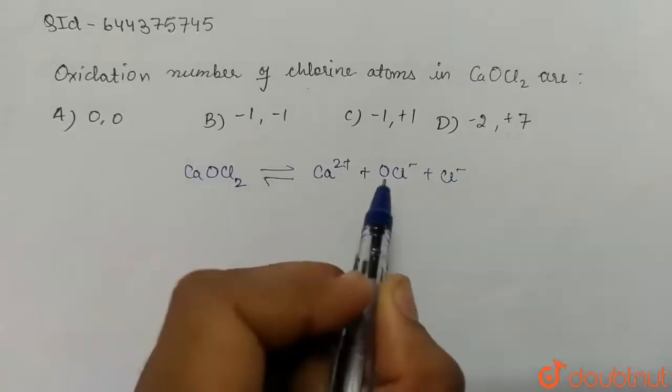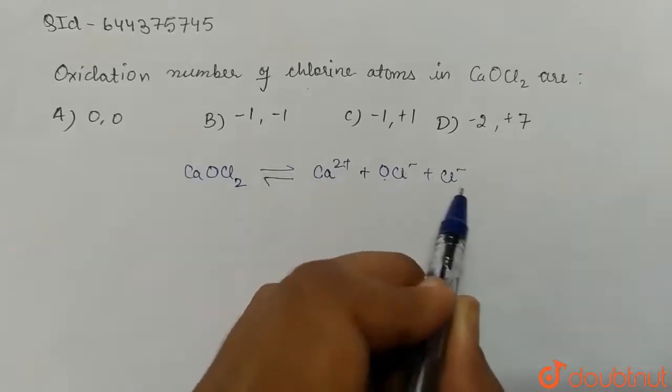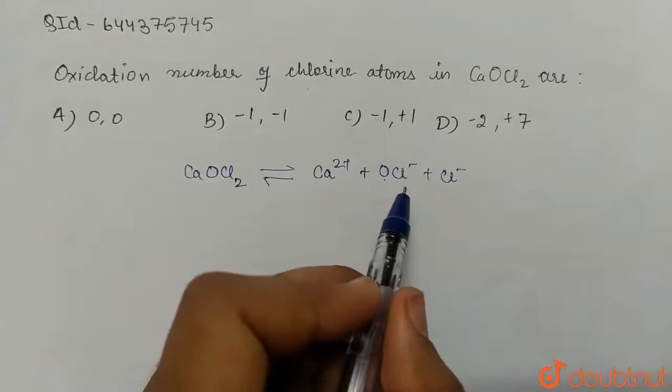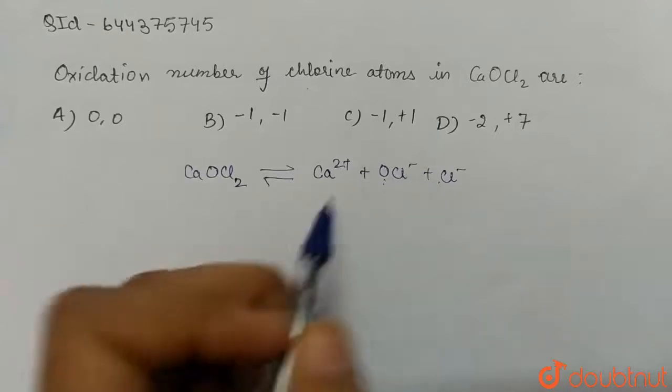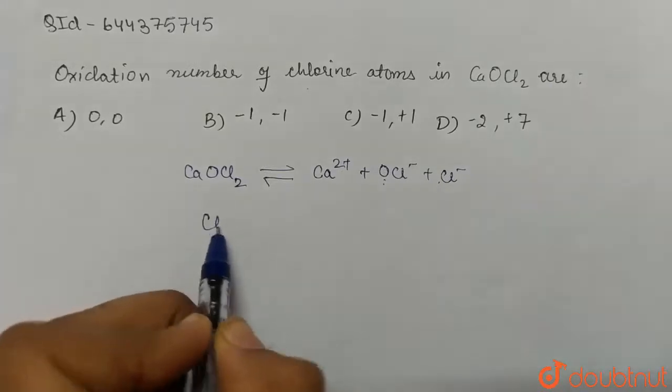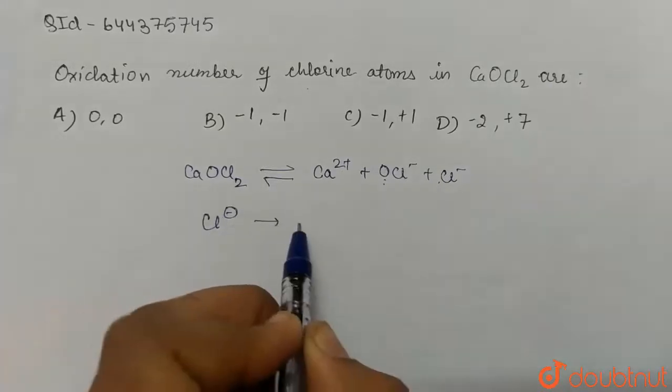So we have two chlorine atoms, one is Cl- and one is with OCl-. So here in case of Cl- the oxidation state is equals to minus one.